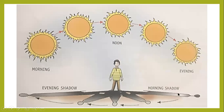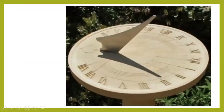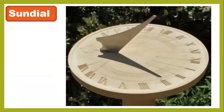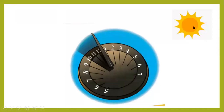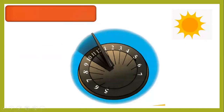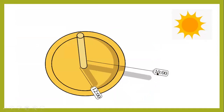At evening the shadow is longer; in the morning the shadow is also longer, but at midday the shadow is shorter. We talked about the sundial — the sundial is used for measuring shadows. Here is the source of light, the sun, and this is the sundial. At 10 a.m. the shadow is longer, and at midday, 12 p.m., the shadow is shorter.